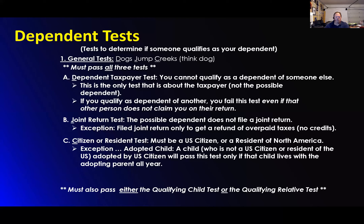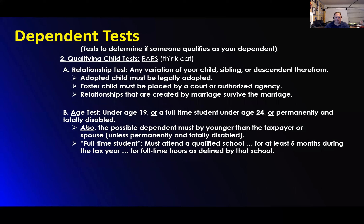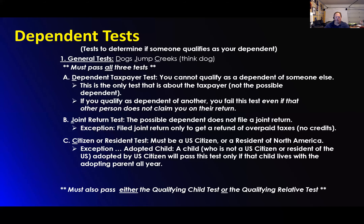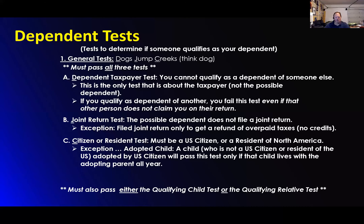Dependency test: can you qualify as a dependent for someone else? If you do, you do not get to be qualified as a dependent — even if that person does not choose to claim you. The joint return test: the possible dependent does not file a joint return. The exception is if you file a joint return only to get a refund of overpaid taxes.